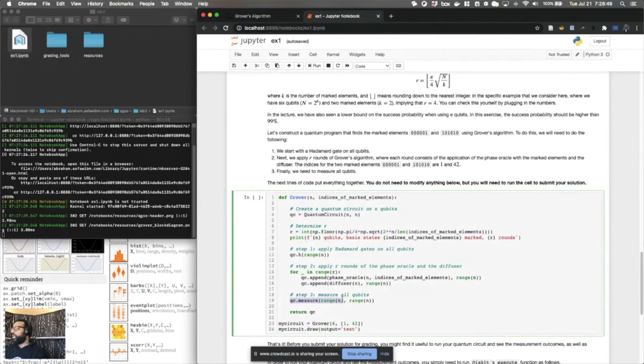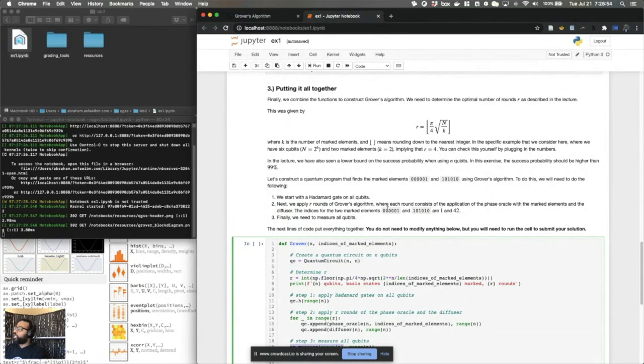Now, we are looking for the particular instance of Grover's algorithm where we're looking for two marked states. And those two marked states have length six. So this is a six qubit Grover algorithm. And the indices of these marked states, we tell you are one and 42. So the answers are one and 42.